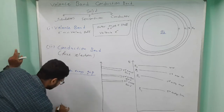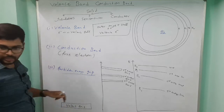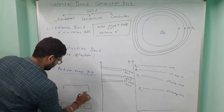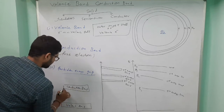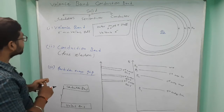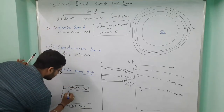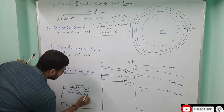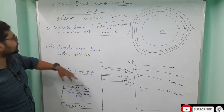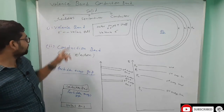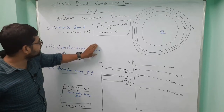The gap between the valence band and the conduction band is called the forbidden energy gap. So if this is the valence band below and this is the conduction band above, then this distance between them is the forbidden energy gap. Depending upon this gap and the material, we classify the material as insulator, semiconductor, or conductor.